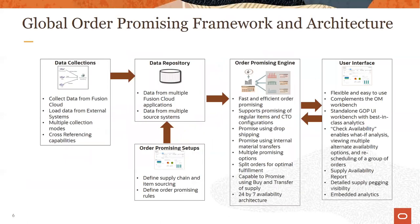Now let's look at some of the framework and architectural elements of GOP. Through data collection, data from the various Oracle Execution Cloud modules are collected into the planning data repository for use by GOP. Data could include static data such as items, item structures, work definitions, calendars, supplier data, units of measure, currency, and so on. Dynamic data such as transfer orders, work orders, on hand, purchase orders, and so on are also collected.